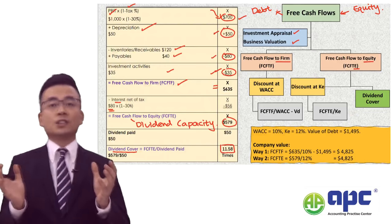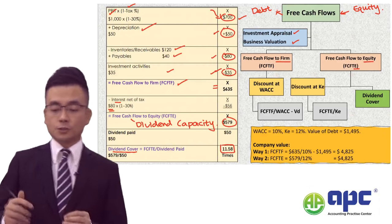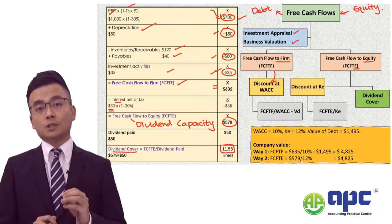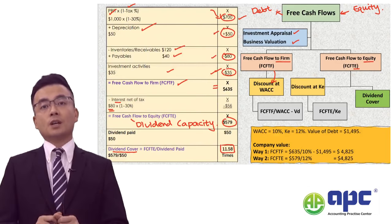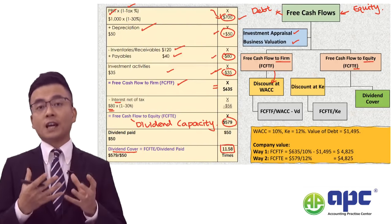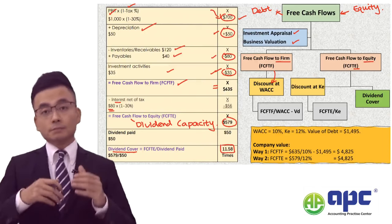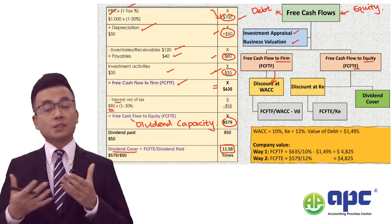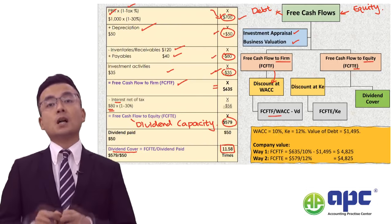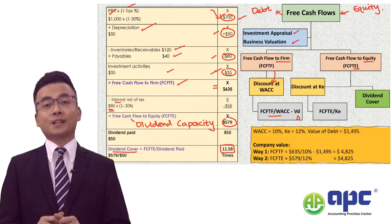The second area in the syllabus is valuing a business. We can discount the free cash flows to firm at the weighted average cost of capital, because WACC accounts for payments to both debt and equity holders through the cost of debt and cost of equity mixed together. After discounting FCFF at WACC, we subtract the value of debt to calculate the value of equity.